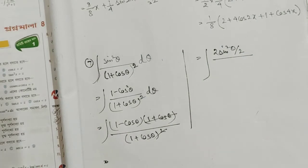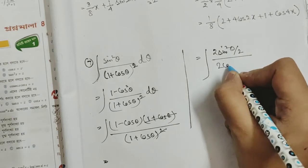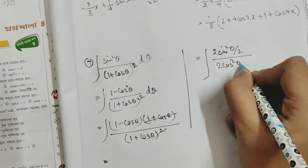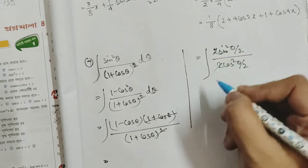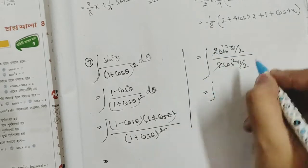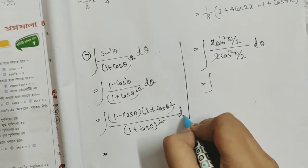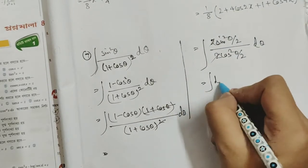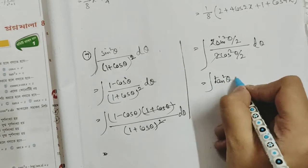We call 1 plus cos theta equal to 2 cos squared (theta by 2). The 2s cancel, so we are left with d theta. The integral becomes tan squared theta d theta.